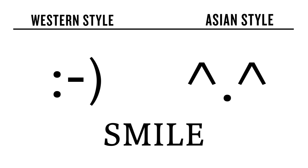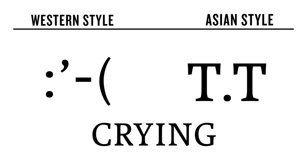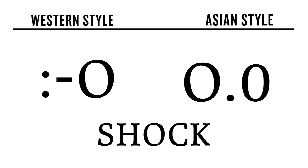Usually, emoticons in Western style have the eyes on the left, followed by nose and mouth. The two-character version which omits the nose is also very popular. Westerns describe their emotion through mouth, but Asians describe their emotion through eyes. Sometimes they omit the mouth to describe emotion.